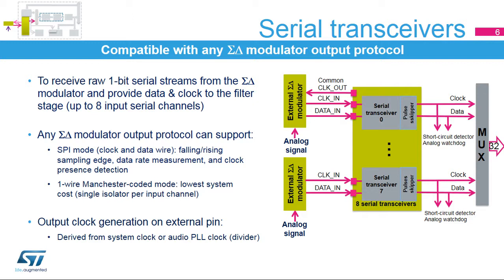Manchester mode also offers the lowest system cost in case of optical isolation of the sigma-delta modulator. The DFSDM clock features a clock output signal to drive the sigma-delta modulator, so only one single isolator per input channel is necessary. It can be used as a source for the SPI clock input by internal interconnection in order to save external pins. The clock output has an adjustable division factor and can be driven either from the system clock or from the fine-tuned audio PLL clock. The pulse skipper module removes a given number of samples from the serial data stream before they enter into the filter, implementing delay-line-like behavior for beam-forming applications.